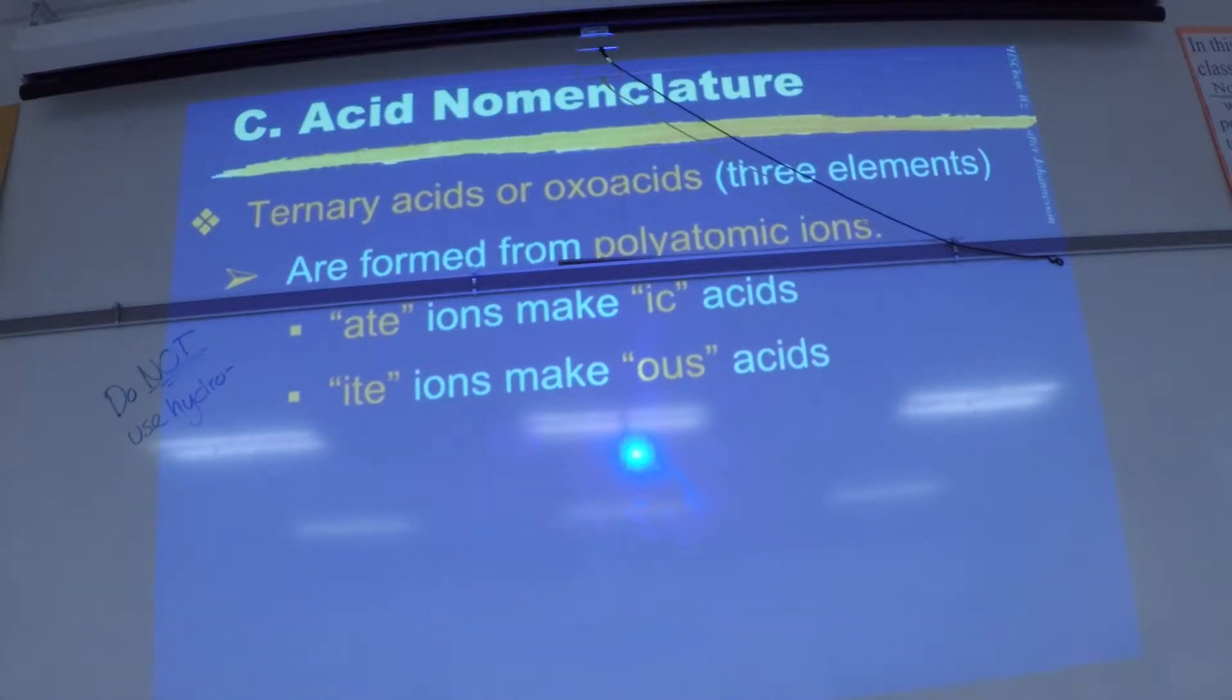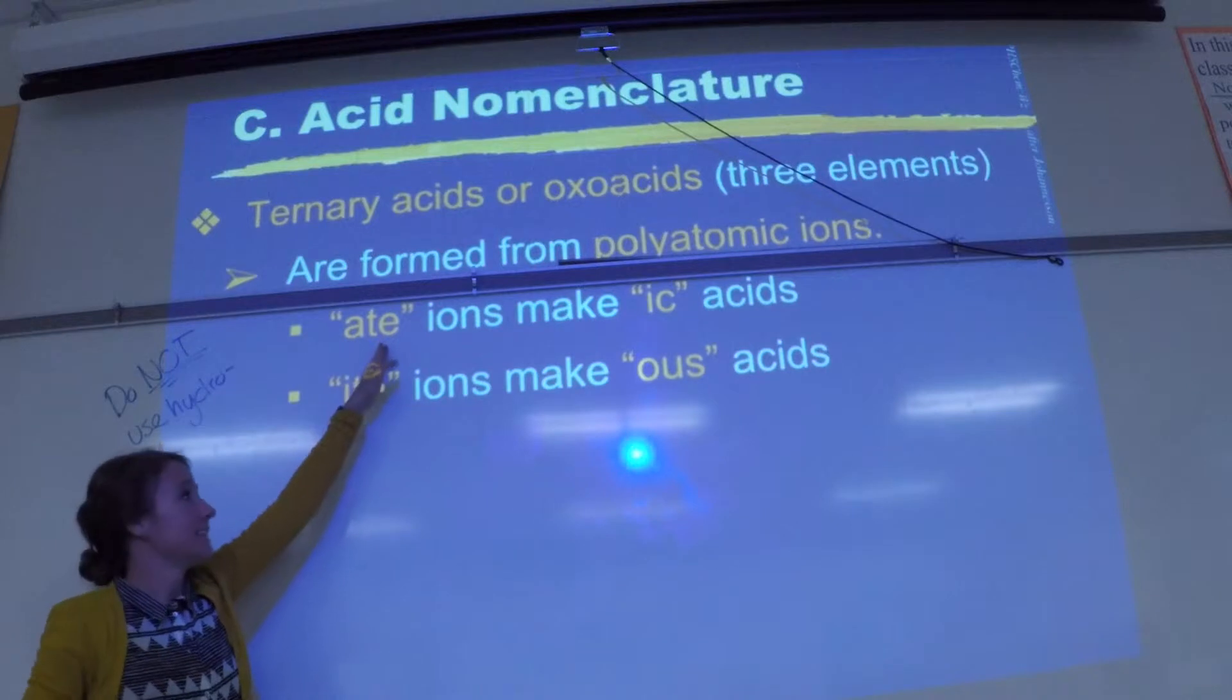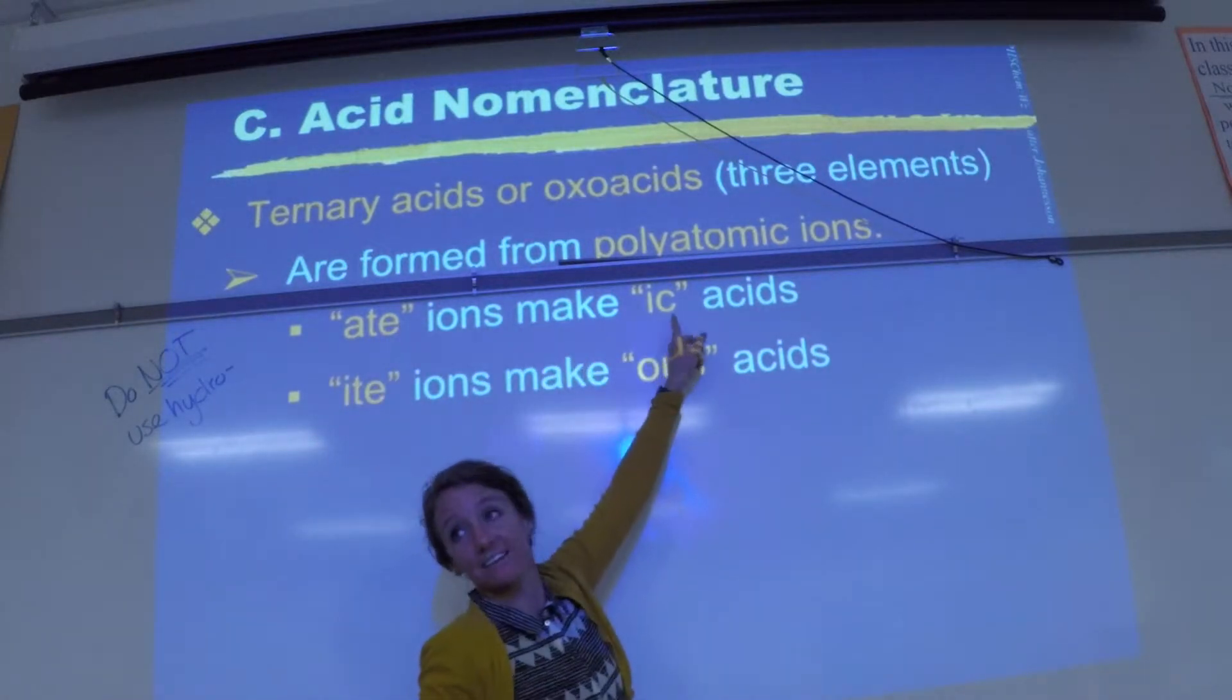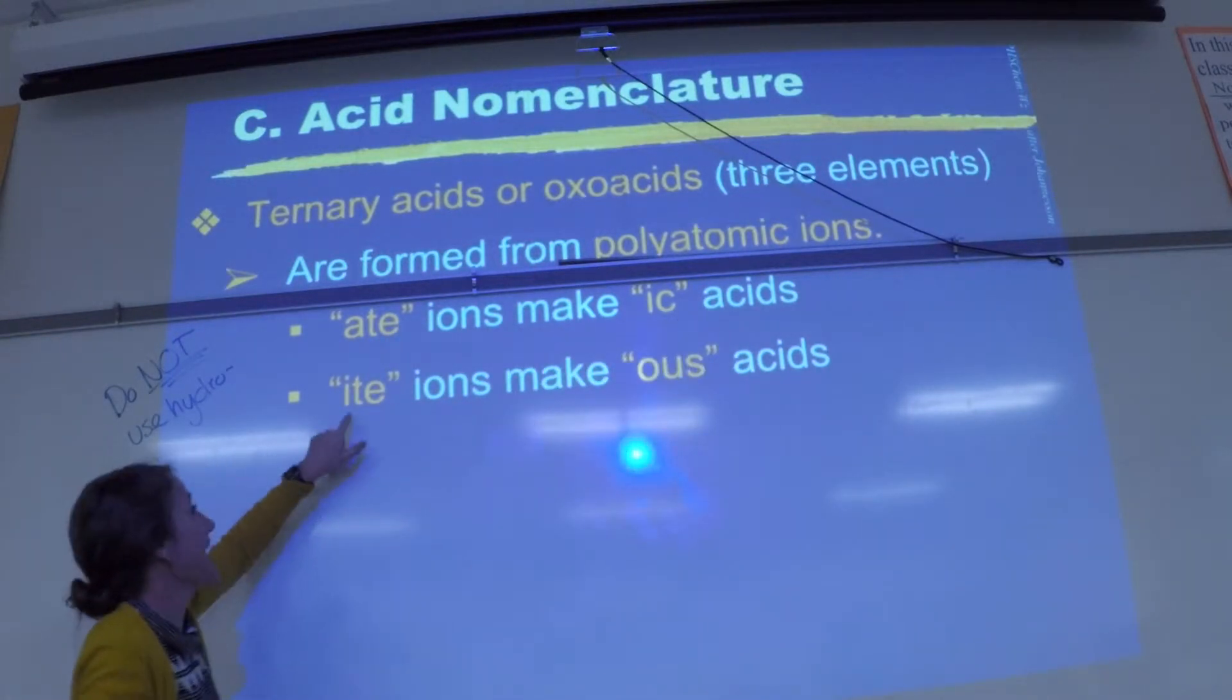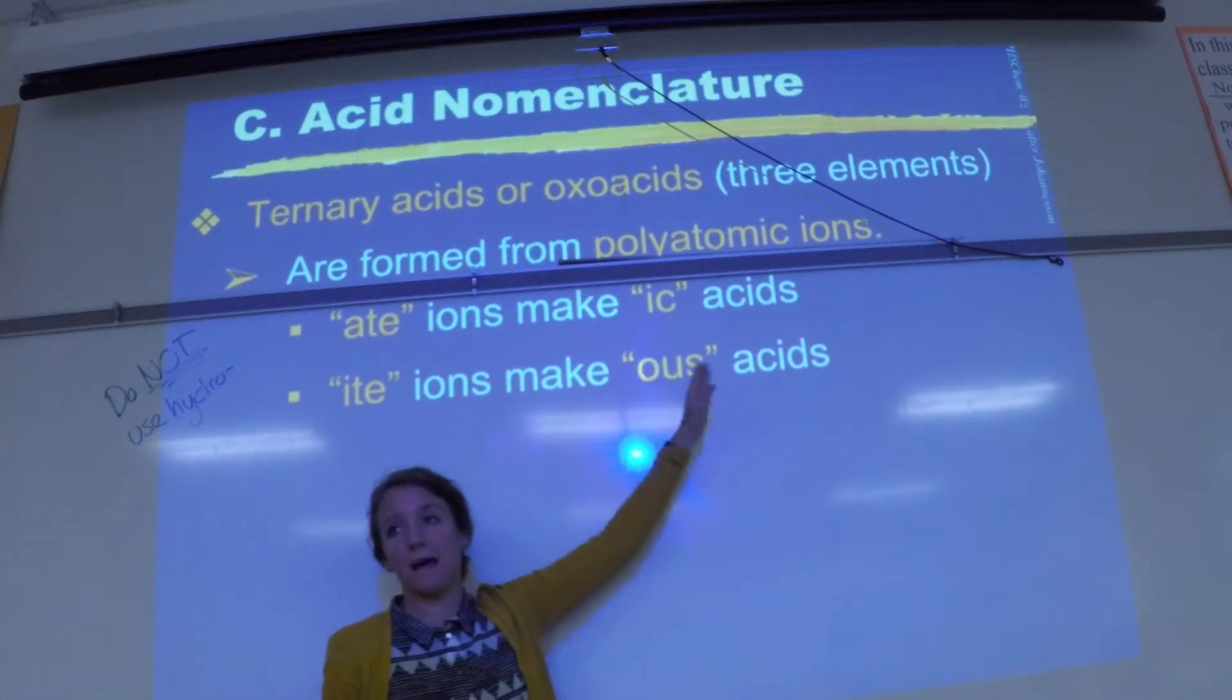So when you are looking at the polyatomic chart, do not put hydro in front of its name. We just change the ending. Now if you look at your polyatomic chart, we're going to change the ending in one of two ways. If the polyatomic ends in ate, then you change the ending to ic. If the polyatomic ends in ite, then you change it to ous.